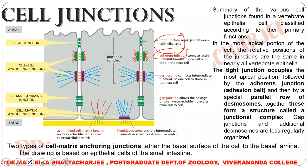These are the adherence junctions or the adhesion belts. Both the adherence junctions and the desmosomes interact with the cytoplasm. The adherence junction connects actin filament bundles in one cell with those in the next cell. Desmosomes connect the intermediate filaments in one cell to those in the next cell.